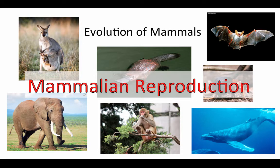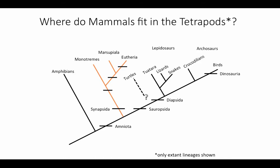So first, let's take a look at how these groups of mammals fit into the rest of amniotes and also how they are related to each other. We're going to think about this tree in terms of dichotomous splitting — a split of one lineage into two lineages.